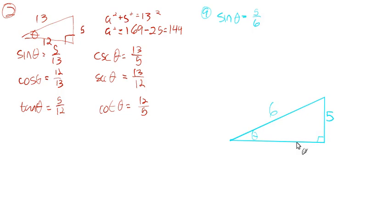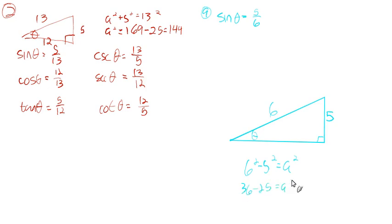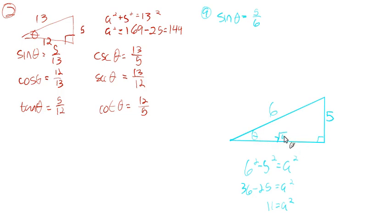Then we can find this other side. We could say a² + 5² = 6², or 6² − 5² = a². That's 36 − 25 = a², which is 11. So we need to take the square root of 11 — the square root of 11 is this other side. We made a triangle with an angle whose sine is 5 over 6 and found the other side to be √11.